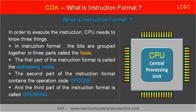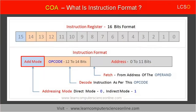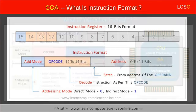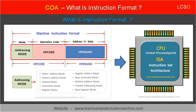The instruction format provides all this information to the processor. In order to execute the instruction, the CPU needs to know three things. In the instruction format, the bits are grouped together in three parts called fields. The first part is called the address mode. The second part contains the operation code, opcode. And the third part is called the operand. The operand contains either the data or the memory address of the data. Let us now study each of the three fields of instruction format in detail.